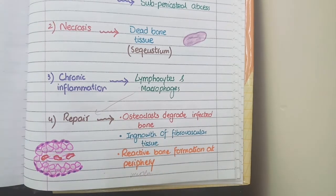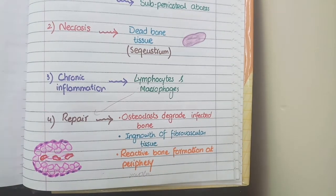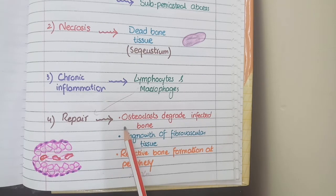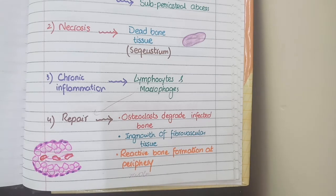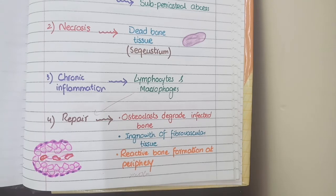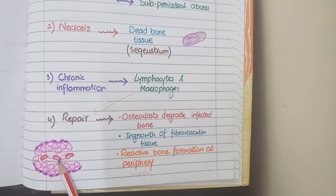When the infection is fully recovered, the process of repair starts. In the repair process, osteoclasts degrade the infected bone, and in the place of this degraded infected bone there is growth of fibrovascular tissue. Along with this, there is reactive formation of bone in the periphery of this fibrovascular tissue. So the central area is fibrovascular tissue and it is surrounded by reactive bone formation.